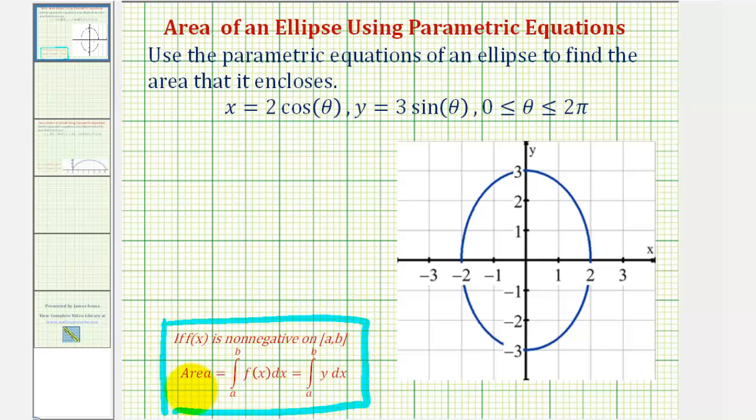then the area is equal to the definite integral of f of x from a to b. If we want, we can substitute y for f of x, giving us this definite integral.